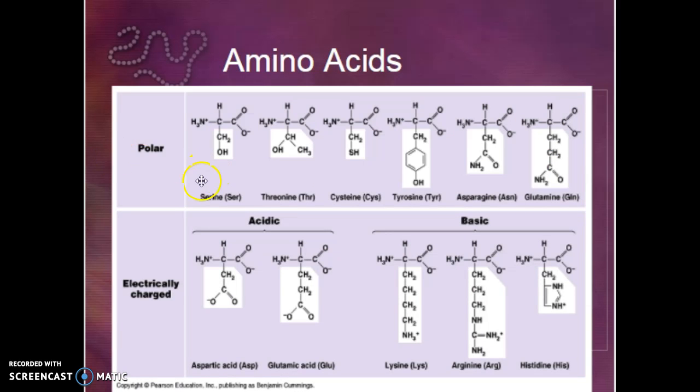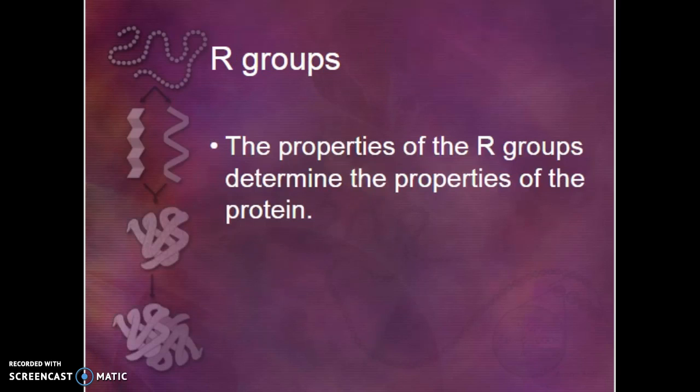Here are our polar and our electrically charged amino acids. Again, same structure except for what's in the box. The different properties of those side chains, those R groups, are what are going to determine the properties of the protein. They're going to determine how the protein folds, which causes it to function one way or another.